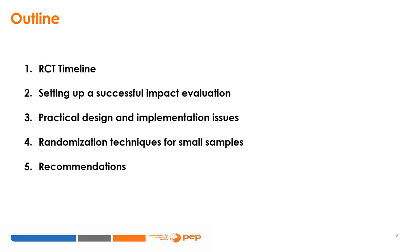Welcome to a new class in PEP's online course on policy impact analysis. We will introduce a series of topics relevant to the implementation of randomised control trials in practice. We will begin by looking at a real-life RCT project timeline, then go through key steps for setting up a successful evaluation, review common design and implementation issues, examine alternative techniques for randomisation in small samples, and conclude with practical recommendations.